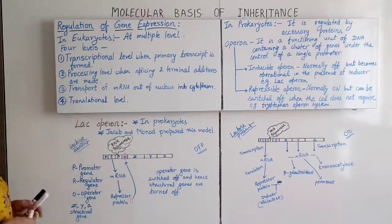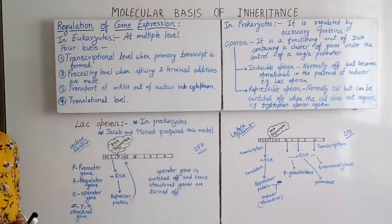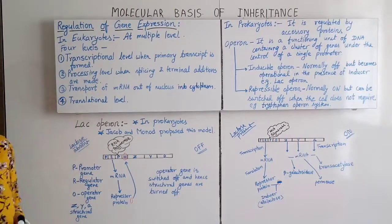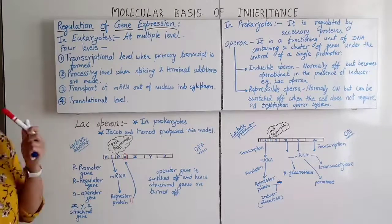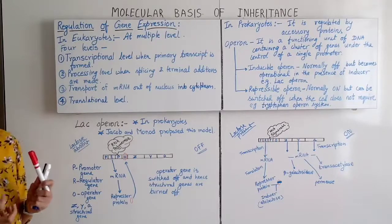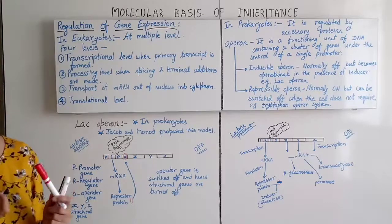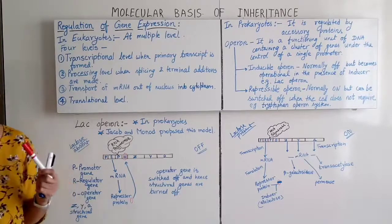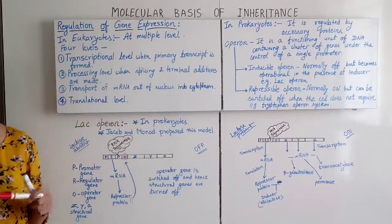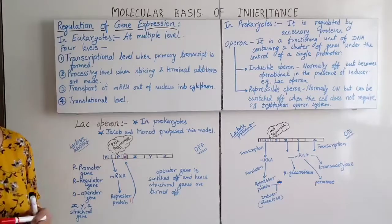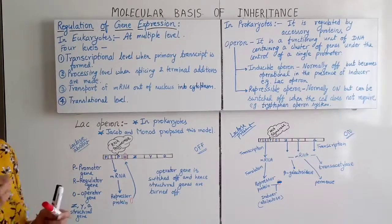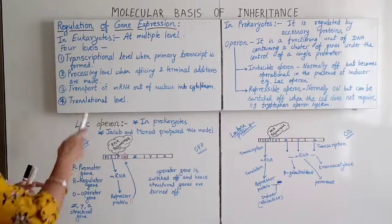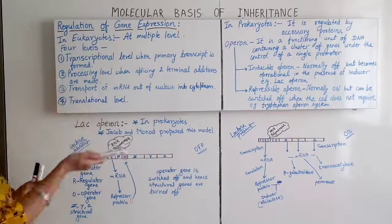The third level is the transport of messenger RNA out of the nucleus into the cytoplasm. After transcription, the newly formed messenger RNA moves from the nucleus to the cytoplasm and reaches the ribosome for protein formation.